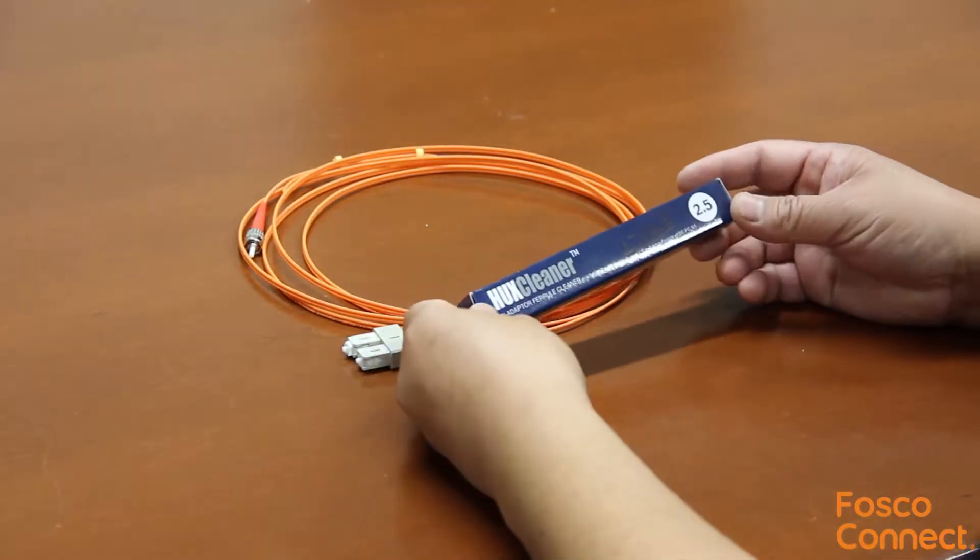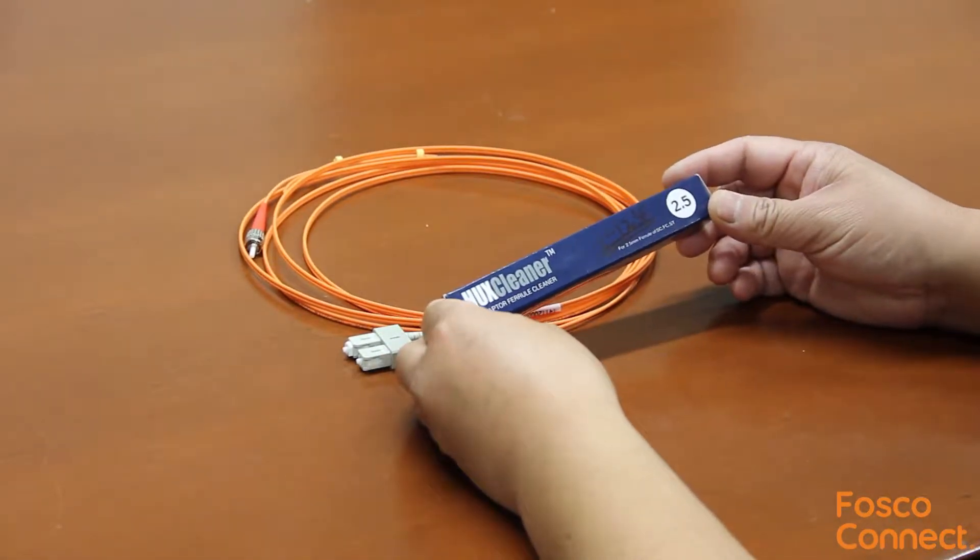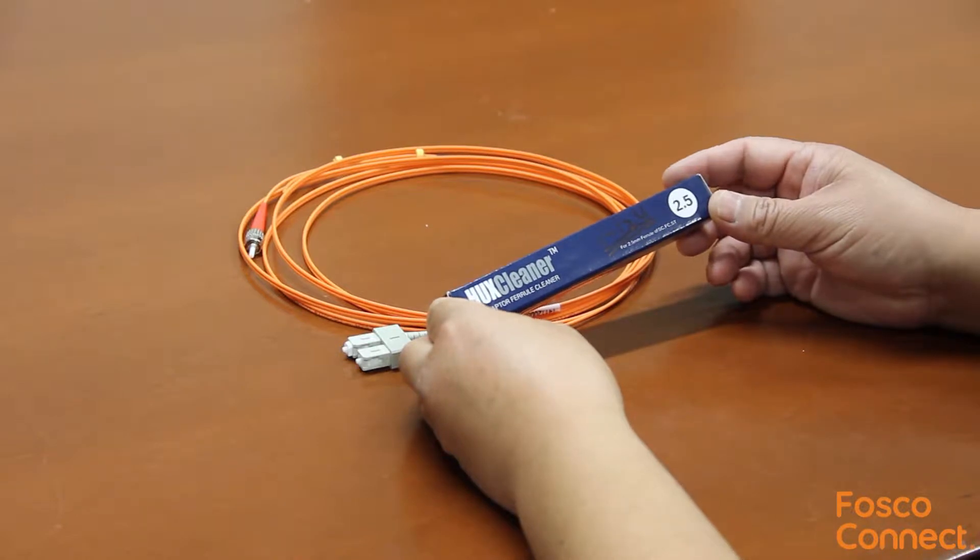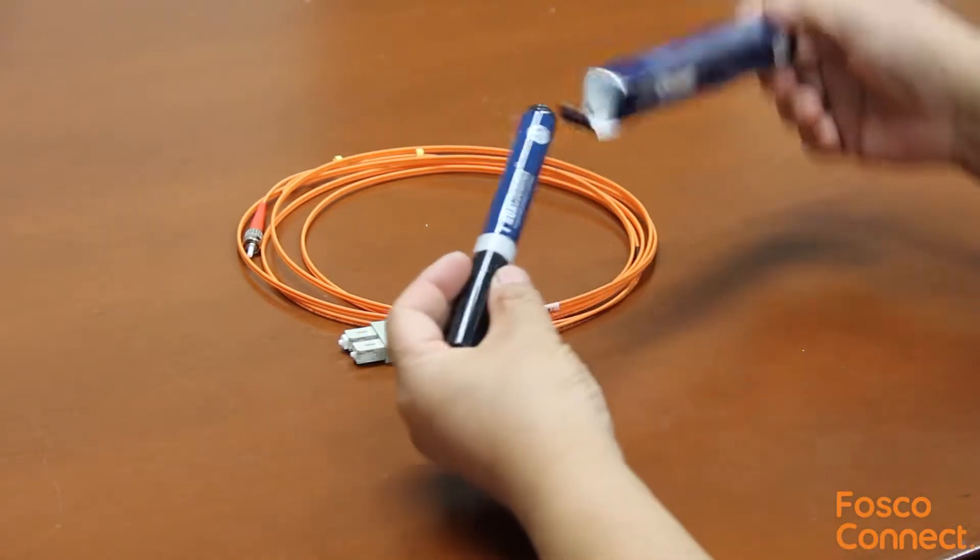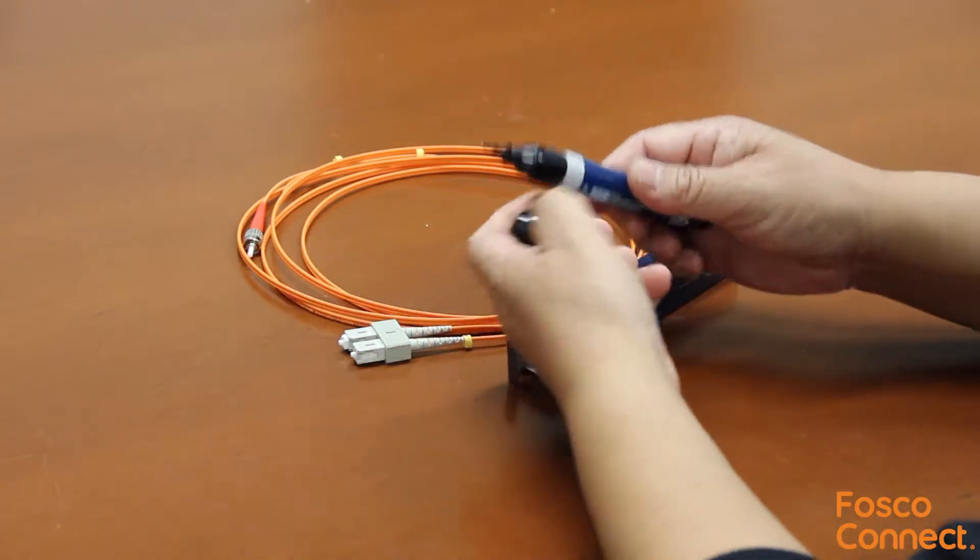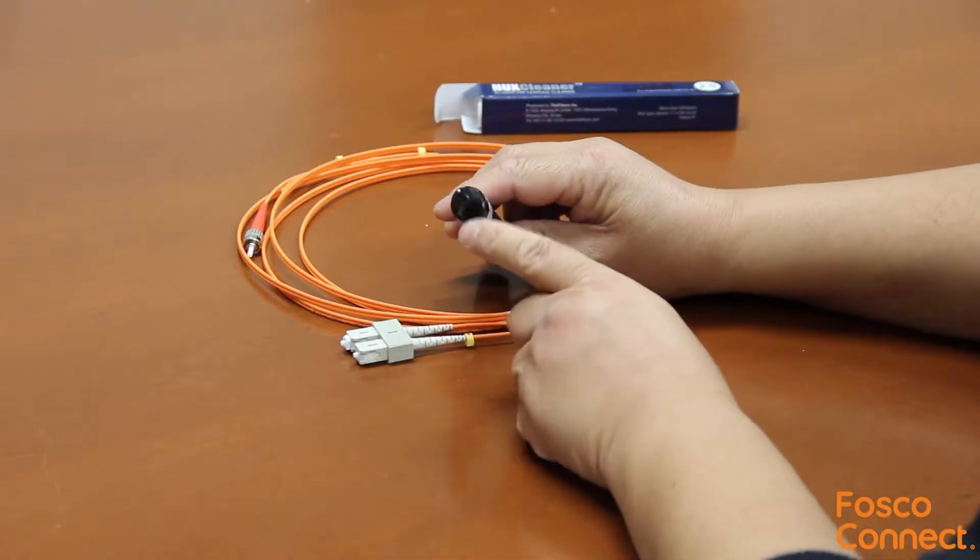This is part number HUXCLEANER25. It is a pen-shaped adapter ferrule cleaner for 2.5mm ferrule connectors, such as SC, ST, and FC connectors.